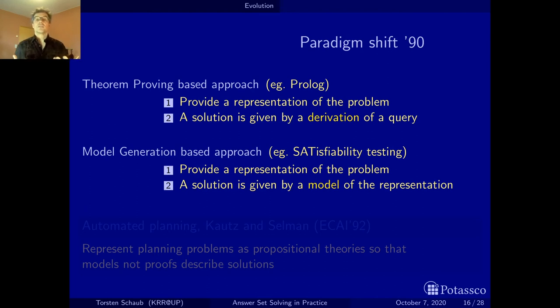This was replaced mid of the 90s by a model generation based approach. Here I think one has to name satisfiability testing as the sub area that pushed this forward, where the idea is also to provide a representation of the problem, but now a solution is given by a model of the representation. Think of the representation as a logical formula or program—you have propositions that can be true or false, and an assignment to all the propositions that makes the whole representation true is a model. This is a very different approach than before.